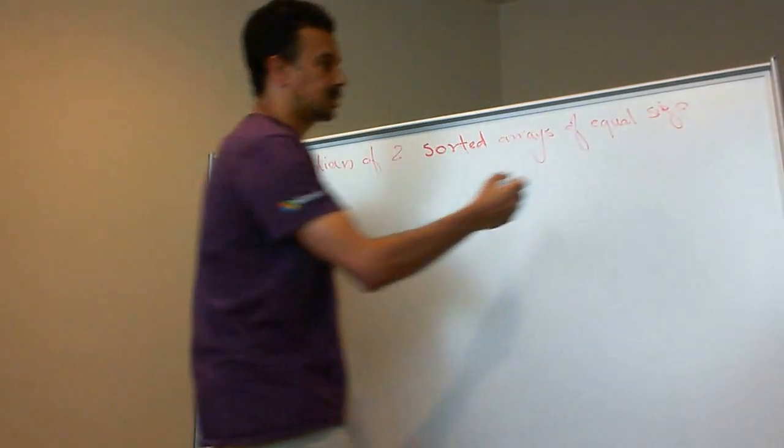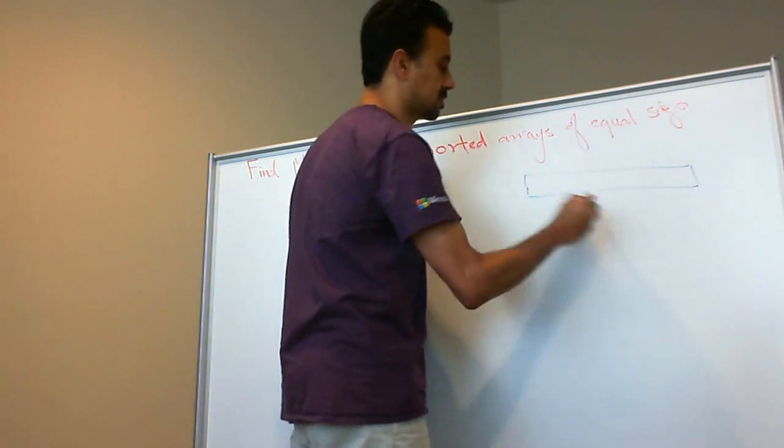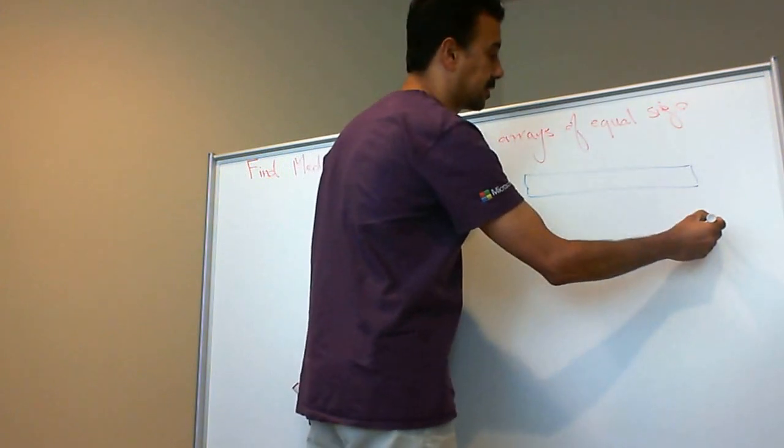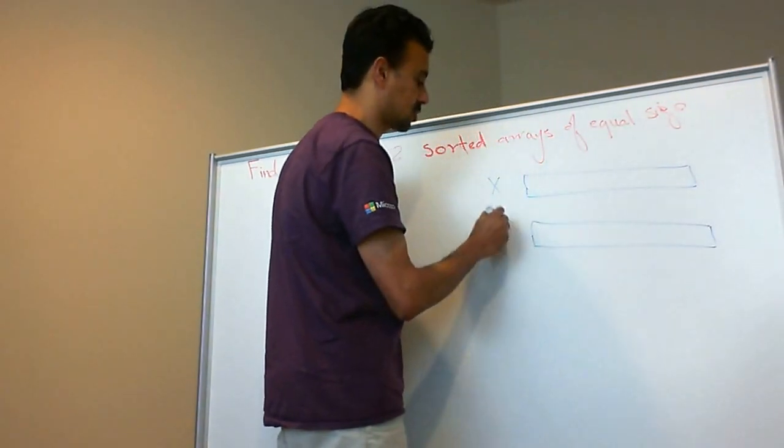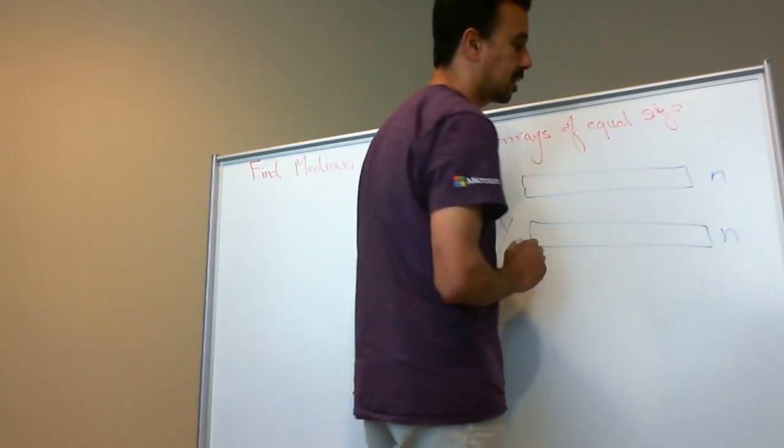Assume you have two arrays of the same size, array x, which is sorted, and array y, which is also sorted. Both of them are of size n.